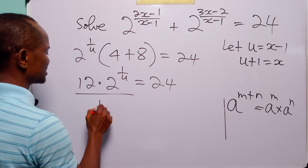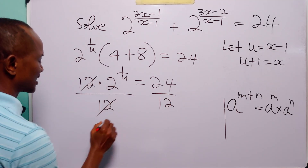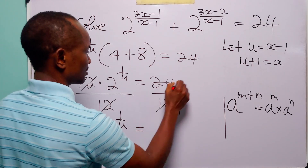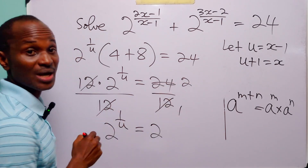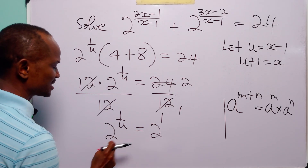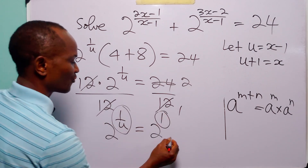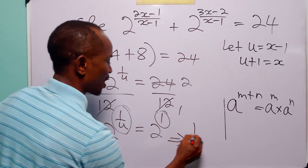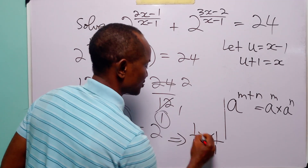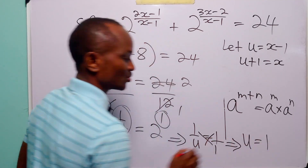Now we divide both sides of this equation by 12. This gives us that 2 to the power 1 over u is equal to 2. And of course, this is 2 to the power 1. Now that we have the same base on both sides of the equation, we can simply equate the exponents. So from here, we have that 1 over u is equal to 1, and by cross-multiplication, we have that u is equal to 1.